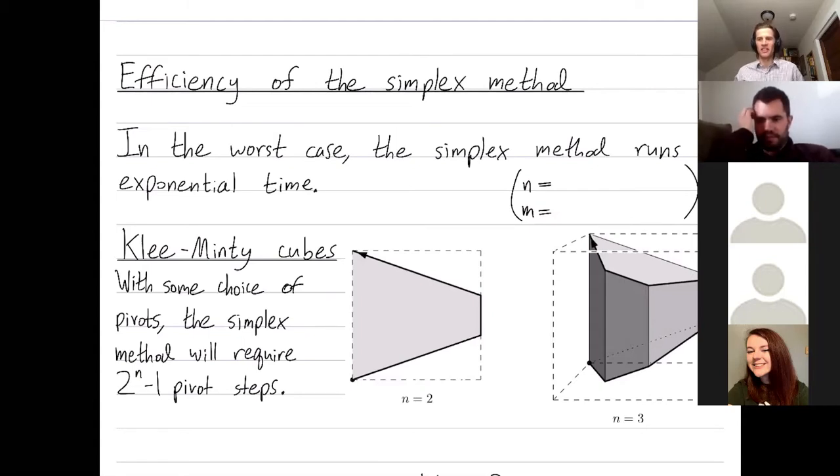So if somebody creates an example that they are designing by hand to be hard for you, then they can make it exponentially hard for you. So in the worst case, the simplex method runs in exponential time, and that's exponential in the number of inputs, which is either the number of variables n, or the number of constraints m.